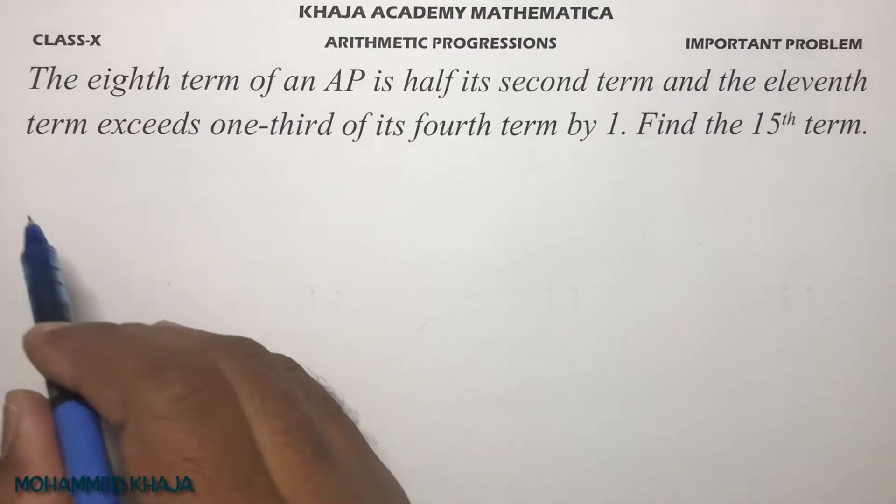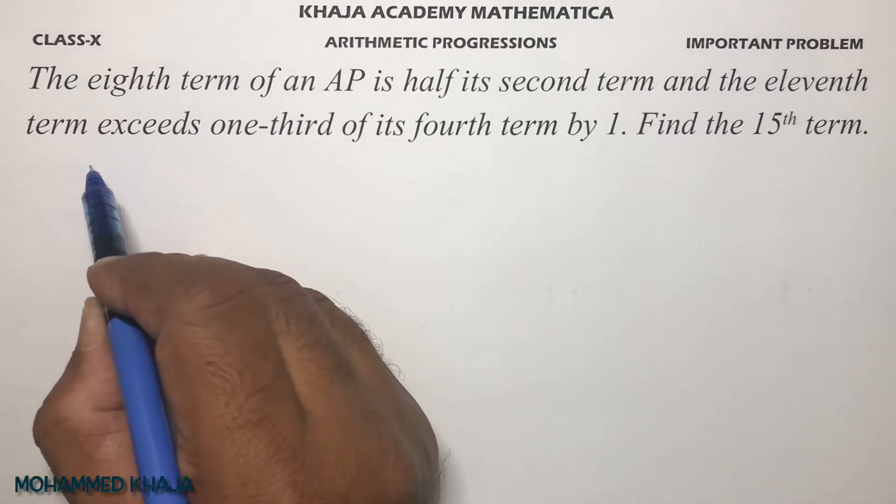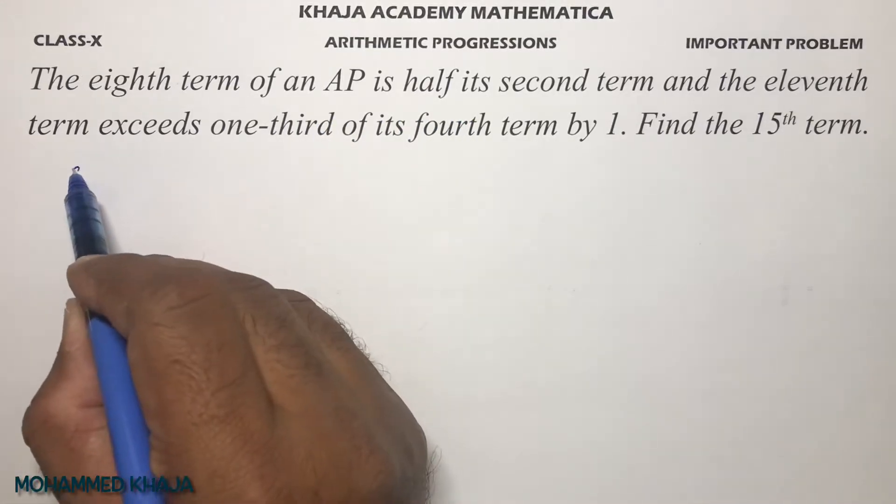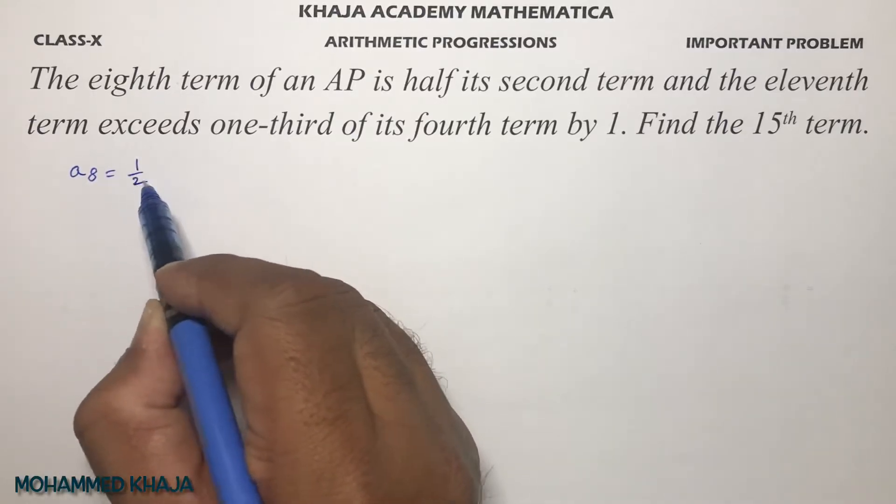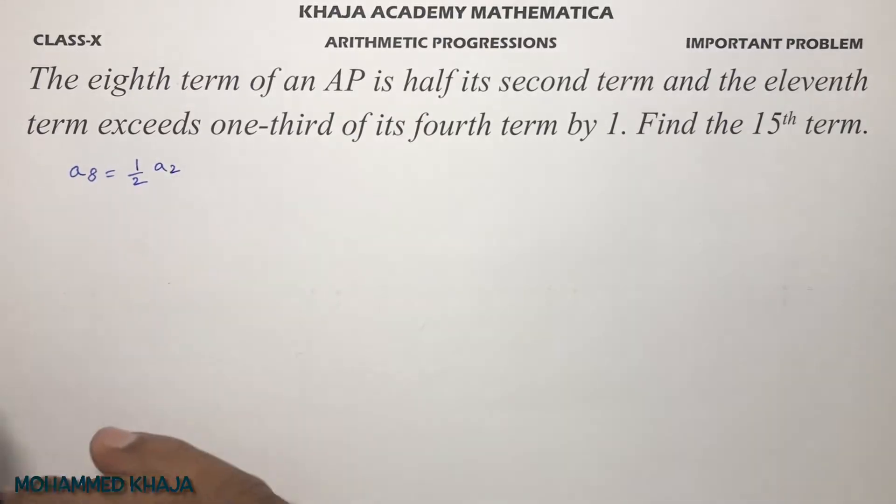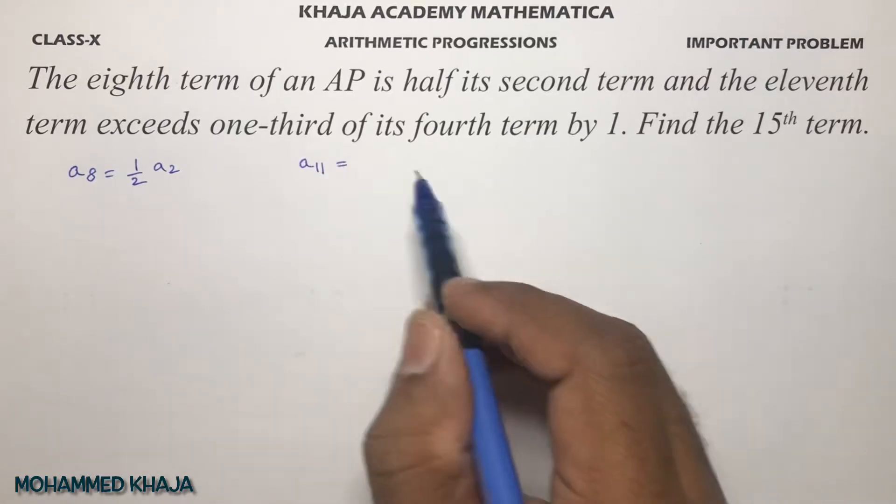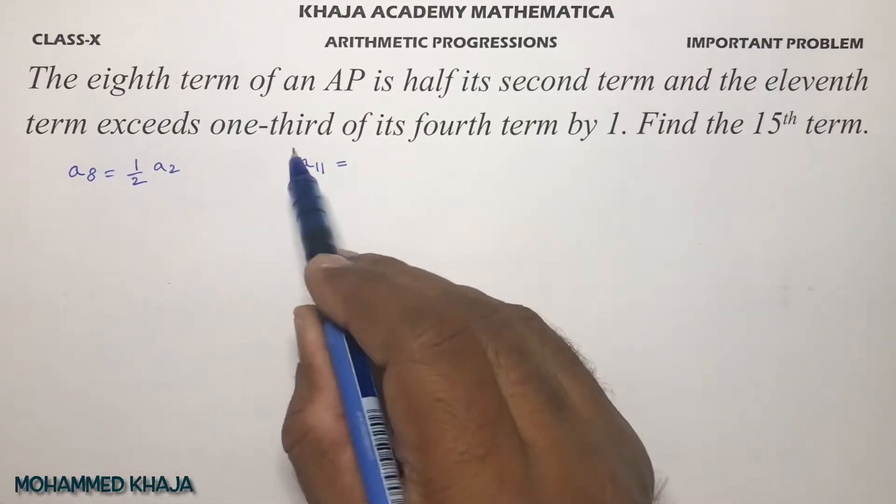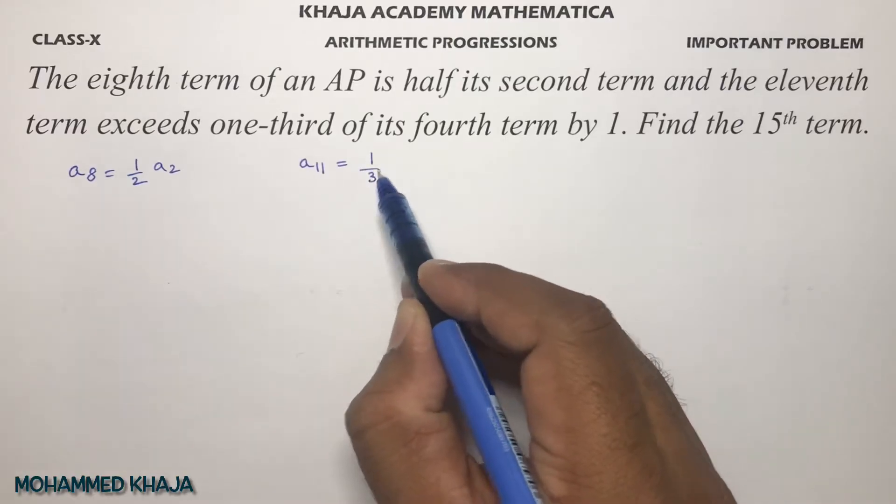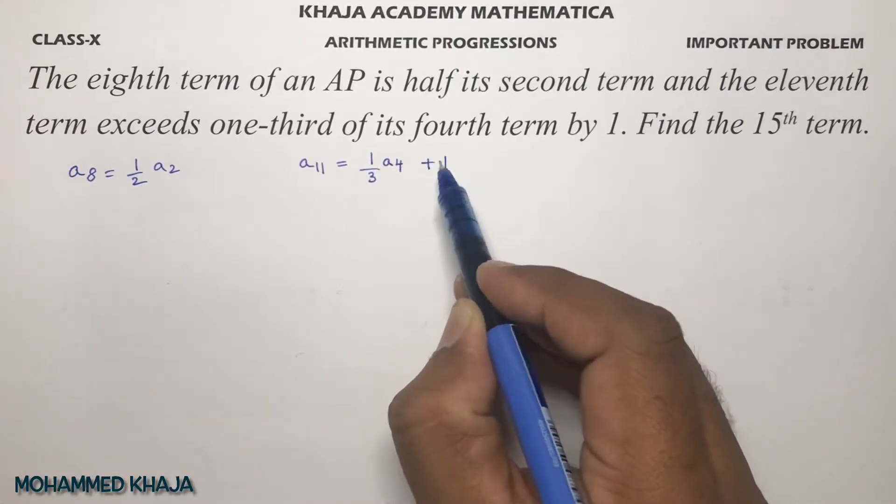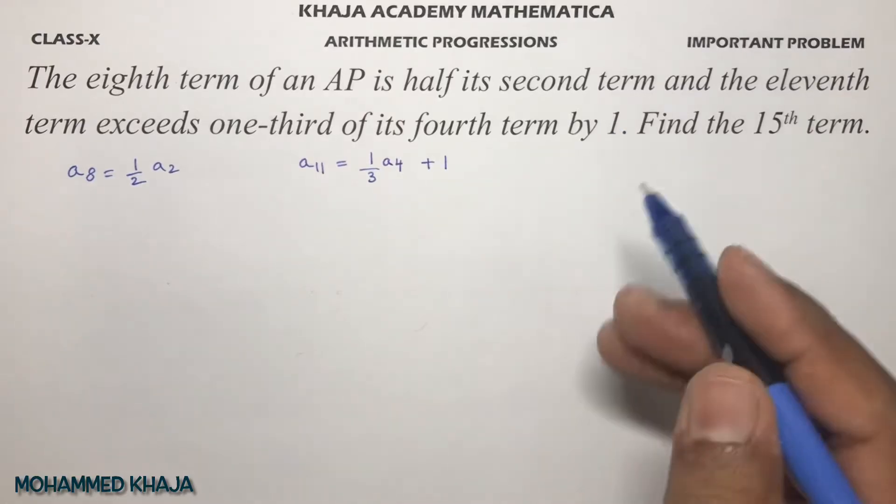Important problem from arithmetic progression. The eighth term of an AP is half its second term, and the eleventh term exceeds one-third of its fourth term by one. Exceeds means more, plus one.